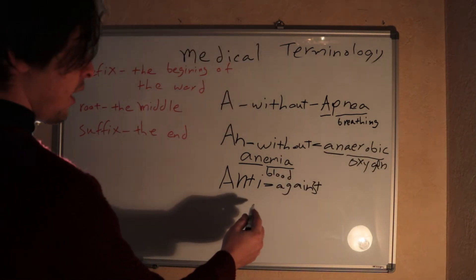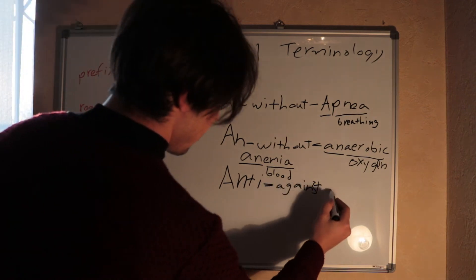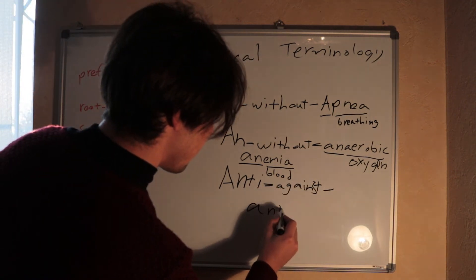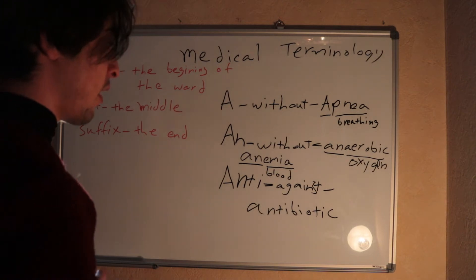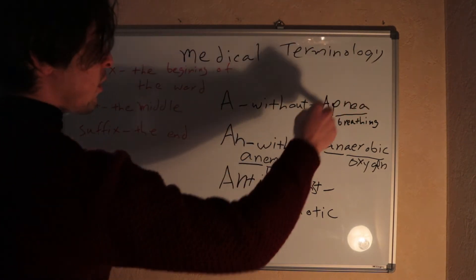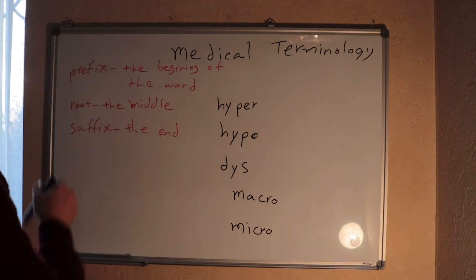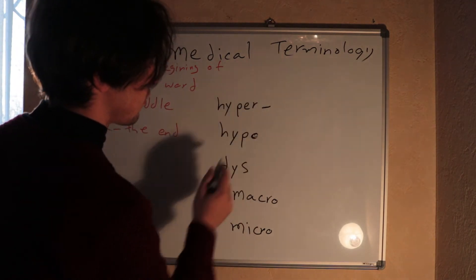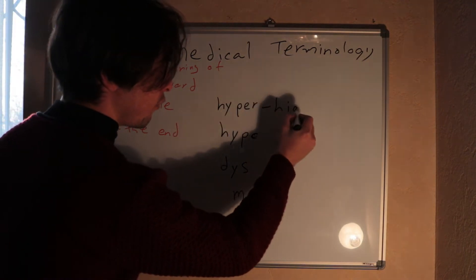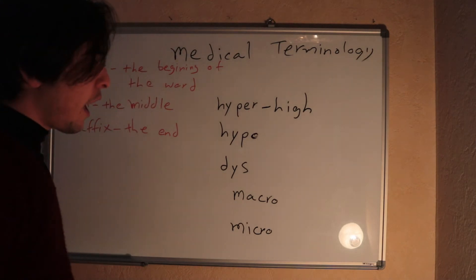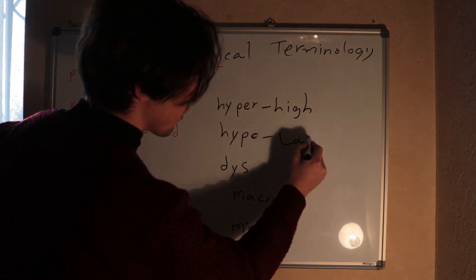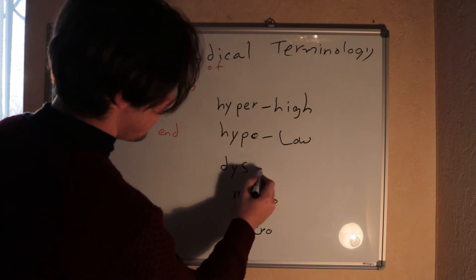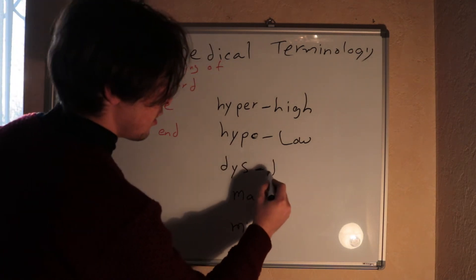The prefix 'anti-' means against. For example, antibiotic — we use it against bacteria. We use terminology to understand these words. More prefix examples: 'hyper-' means high, 'hypo-' is the opposite of hyper and means low, and 'dys-' means difficulty.